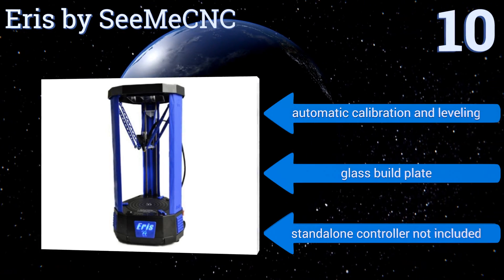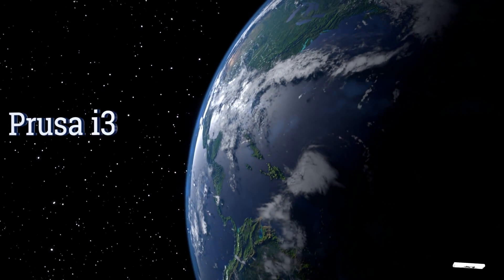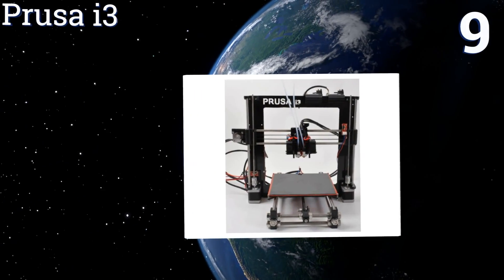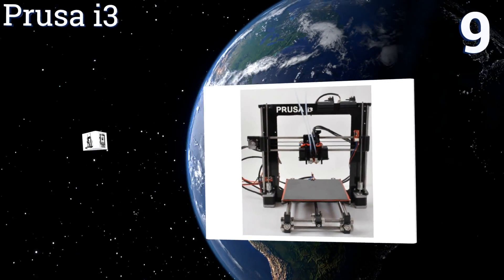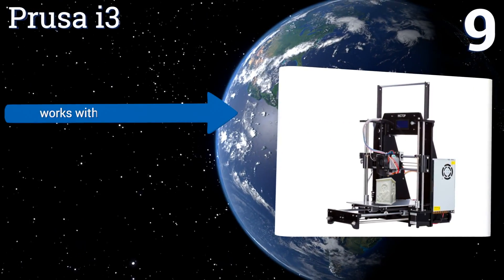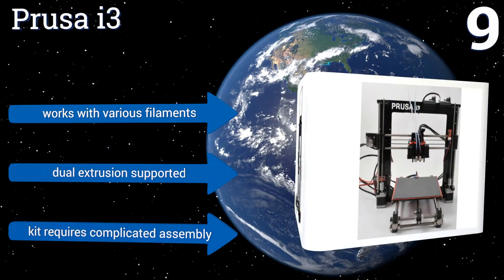At number nine, the iconic Prusa i3 is the torch bearer for the RepRap movement that's driven desktop prototyping innovation for more than a decade. In the years since it was originally developed, the classic DIY kit has continued to inspire makers to try out new ideas and designs at home. It works with various filaments and dual extrusion is supported, but this kit requires a complicated assembly.